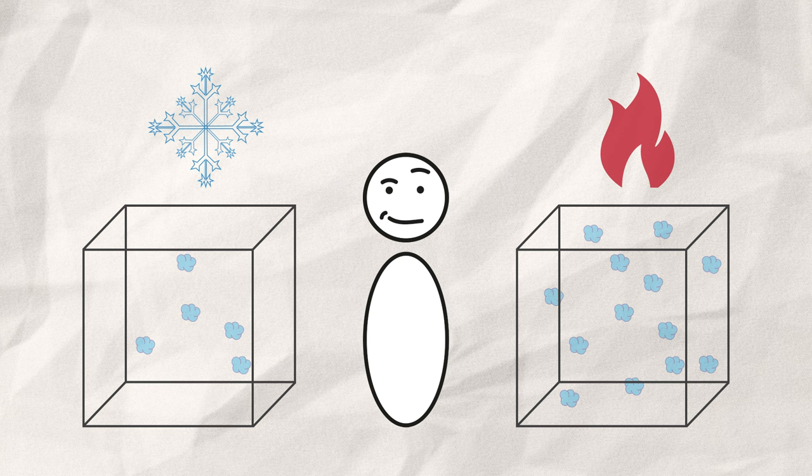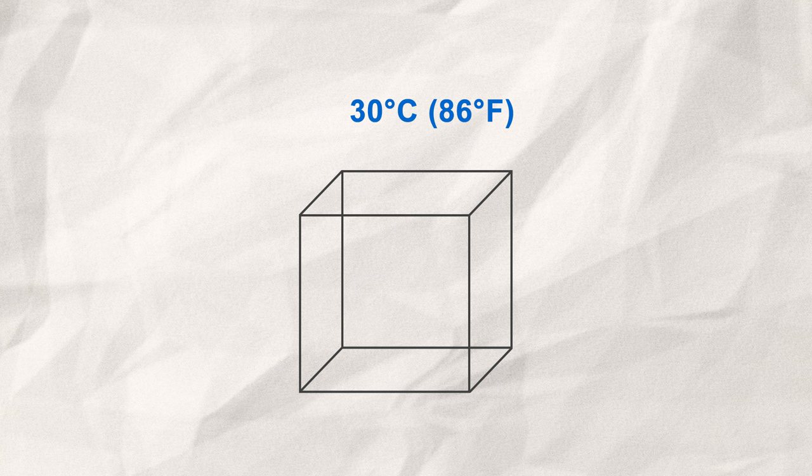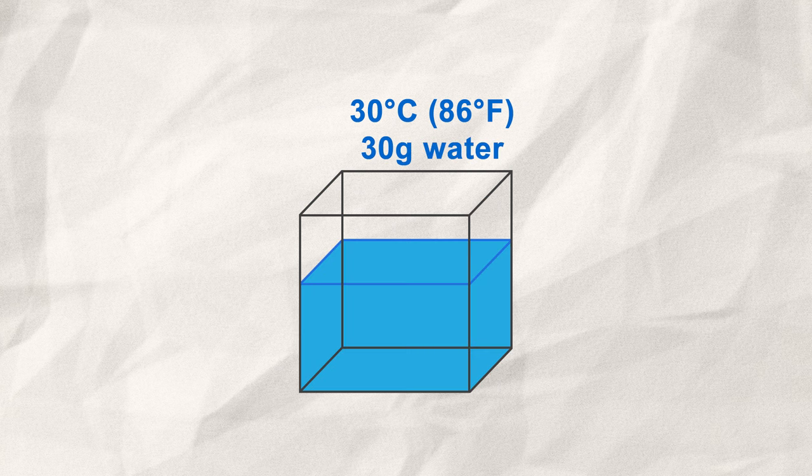The rule is, hot air can hold more water than cold air. One cubic meter of air at 30°C can hold up to roughly 30 grams of water, while air at 10°C can only hold up to roughly 10 grams.